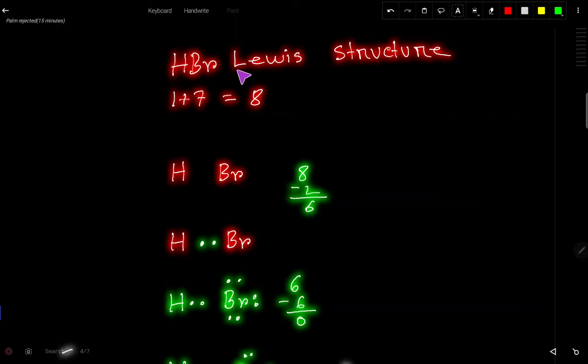HBr Lewis structure or Lewis dot structure for HBr, hydrogen bromide. Let us first find out the valence electrons for HBr. Hydrogen is an element of group 1, so it has one valence electron. Bromine is an element of group 7A, so it has seven valence electrons.